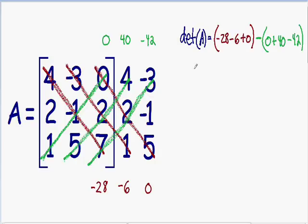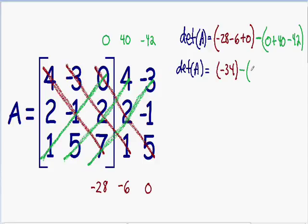Now we only have addition and subtraction left. The determinant of A equals negative 28 minus 6, which is negative 34. Negative 34 plus 0 is negative 34. Then we subtract 0 plus 40, giving 40. And 40 minus 42 is negative 2. So we have negative 34 minus negative 2, which equals negative 32.